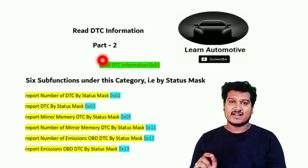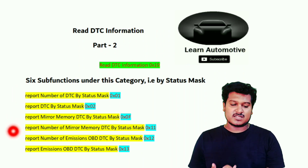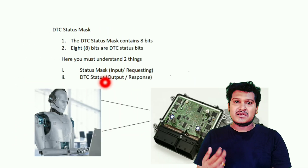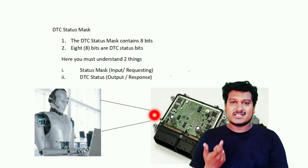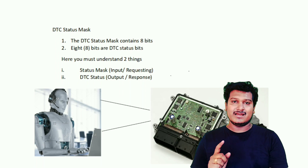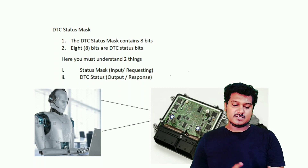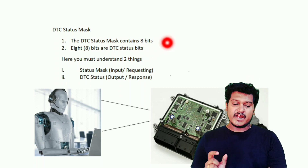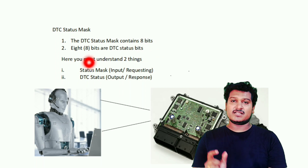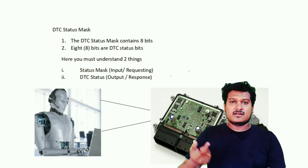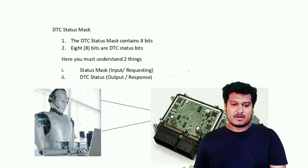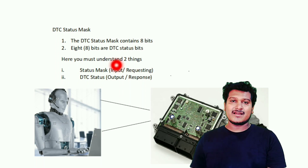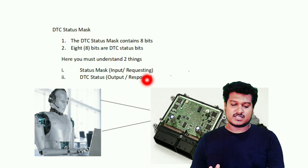There are six sub-functions under this category — request by status mask. Status mask means the tester is requesting the ECU to get the DTC using a status mask. The DTC status mask contains eight bits, which are the DTC status bits. Every DTC has its own status, which we'll discuss in upcoming videos.